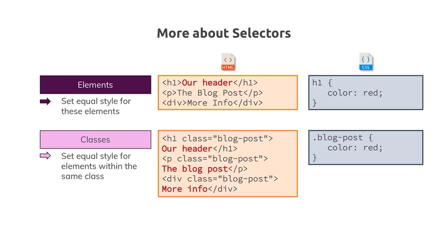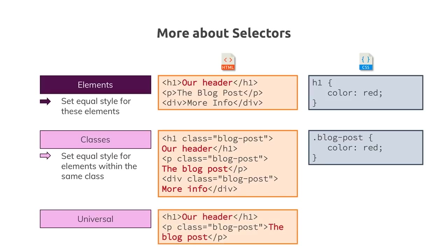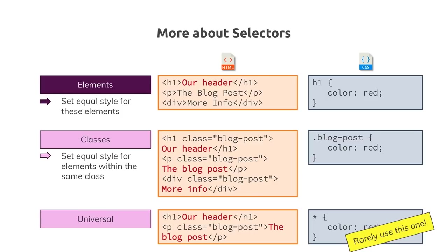Sometimes you want to set a certain style for all elements on the entire page — for that you have the universal selector, using a star. This applies styles to every element on your page. Honestly, you rarely use this one, since you rarely want the exact same style on every single element. There is one specific use case we'll look at later where it makes sense.